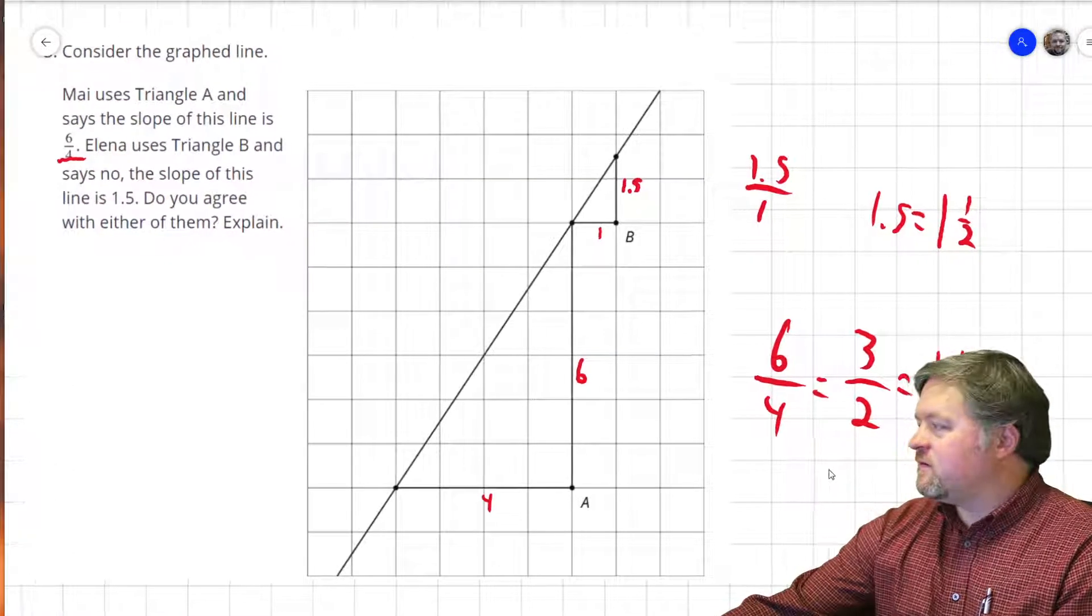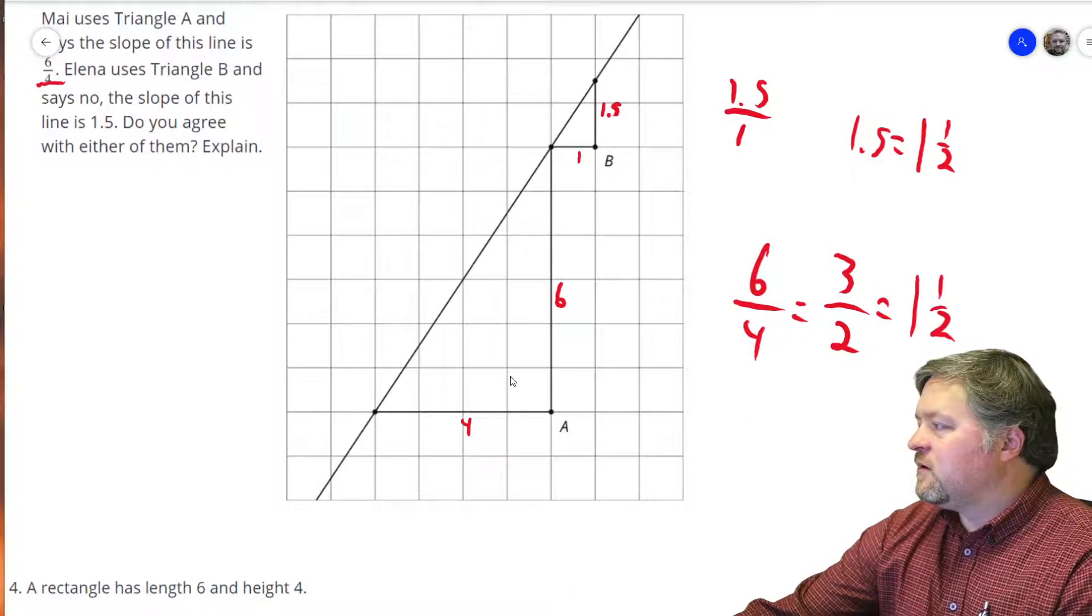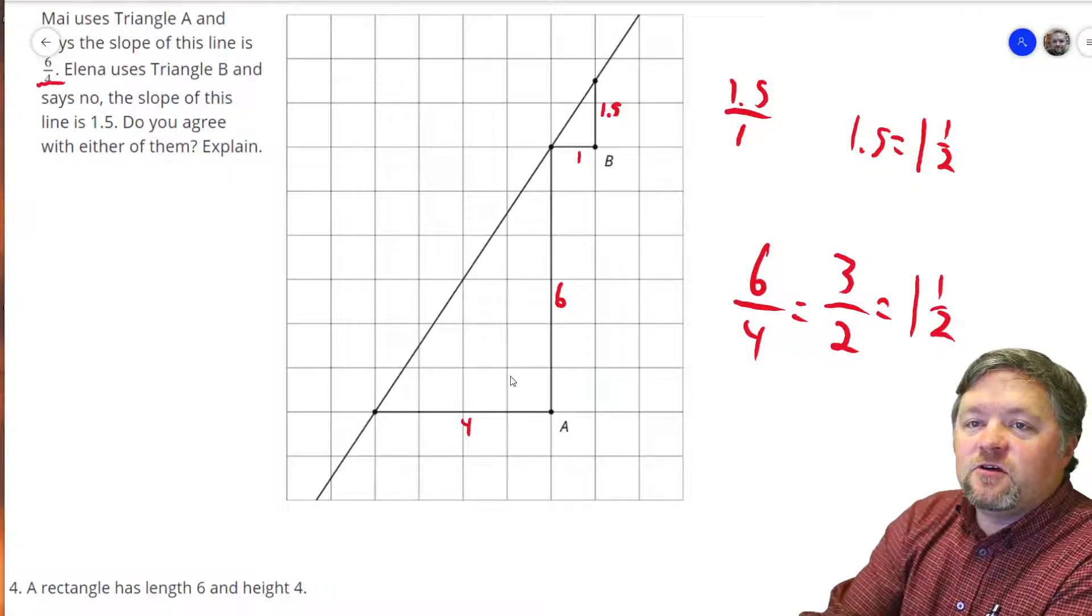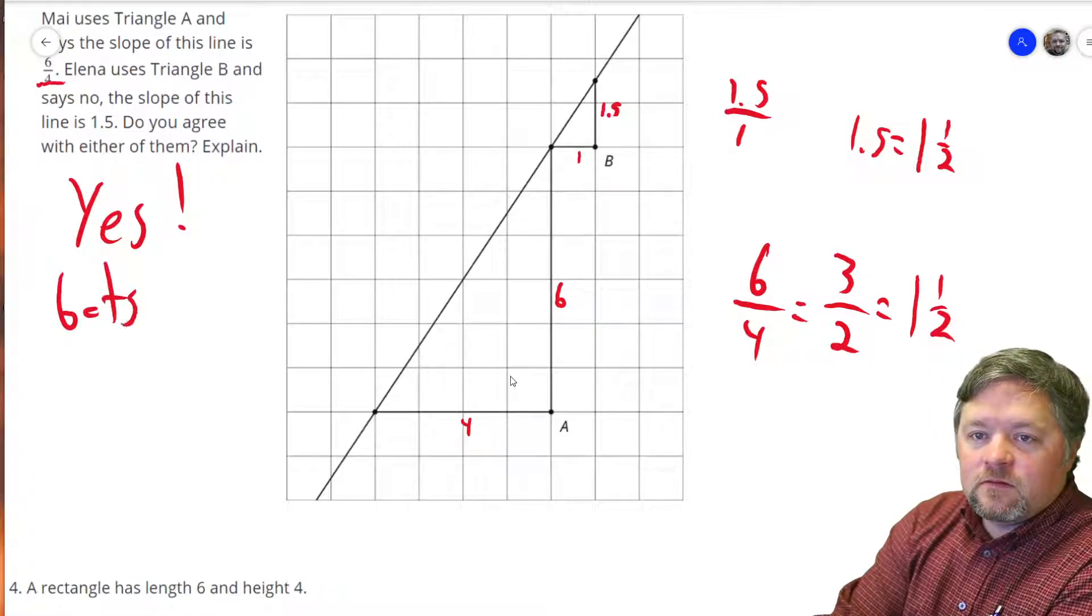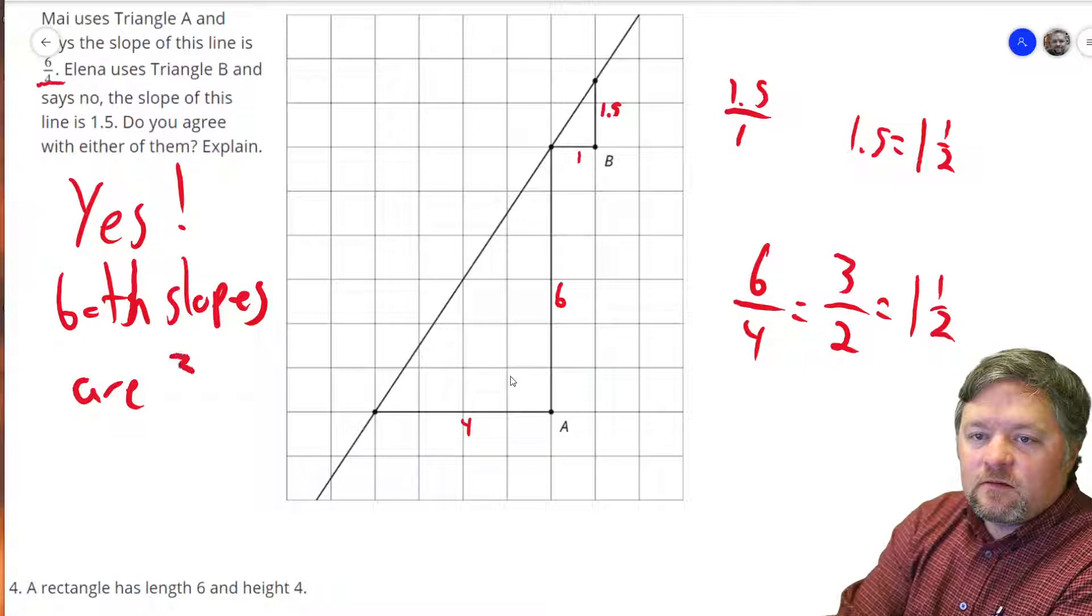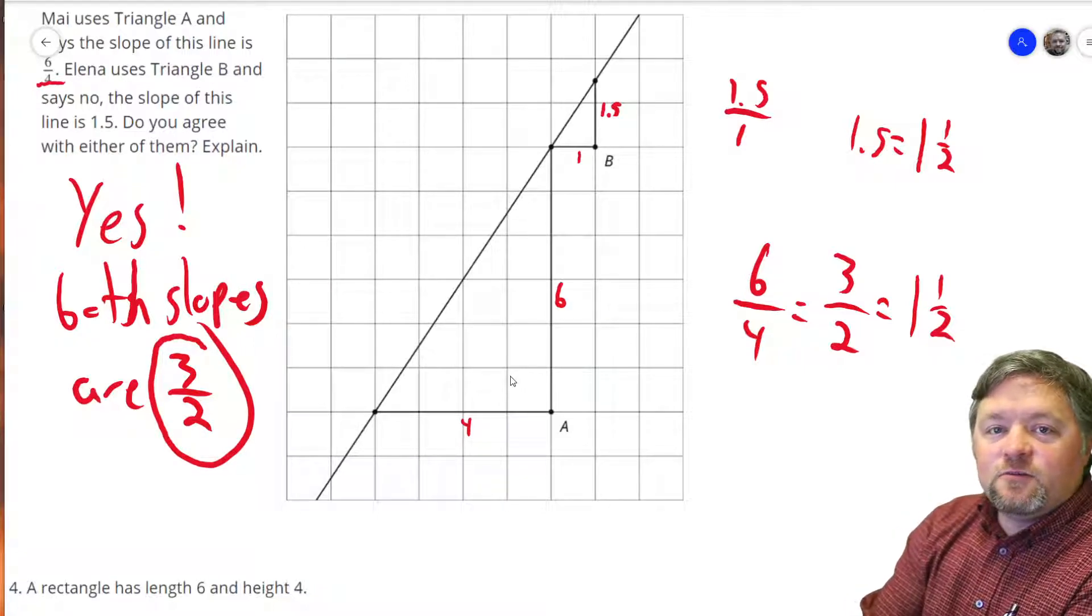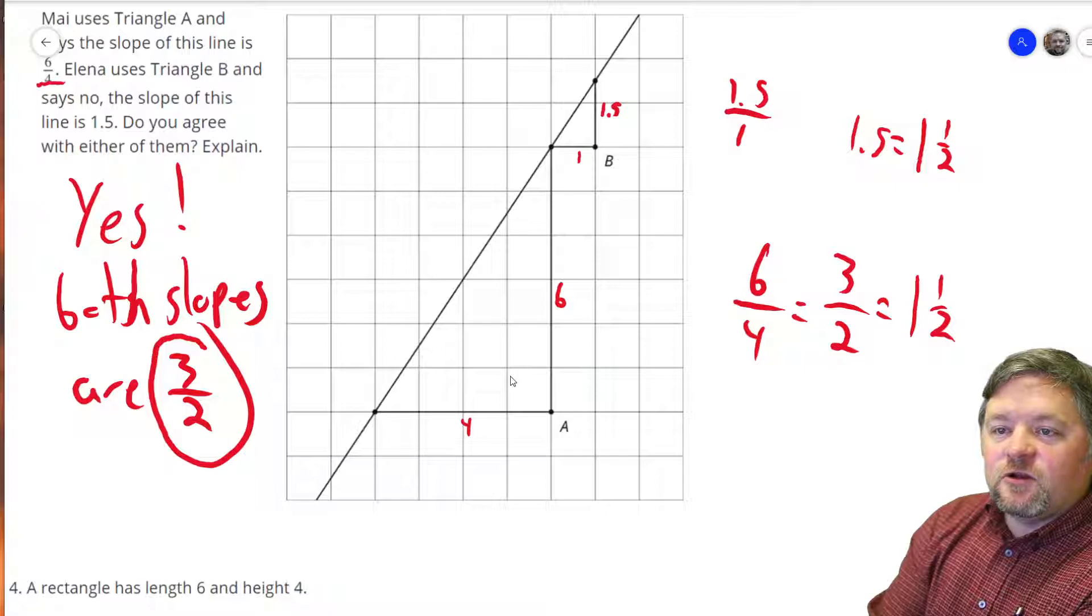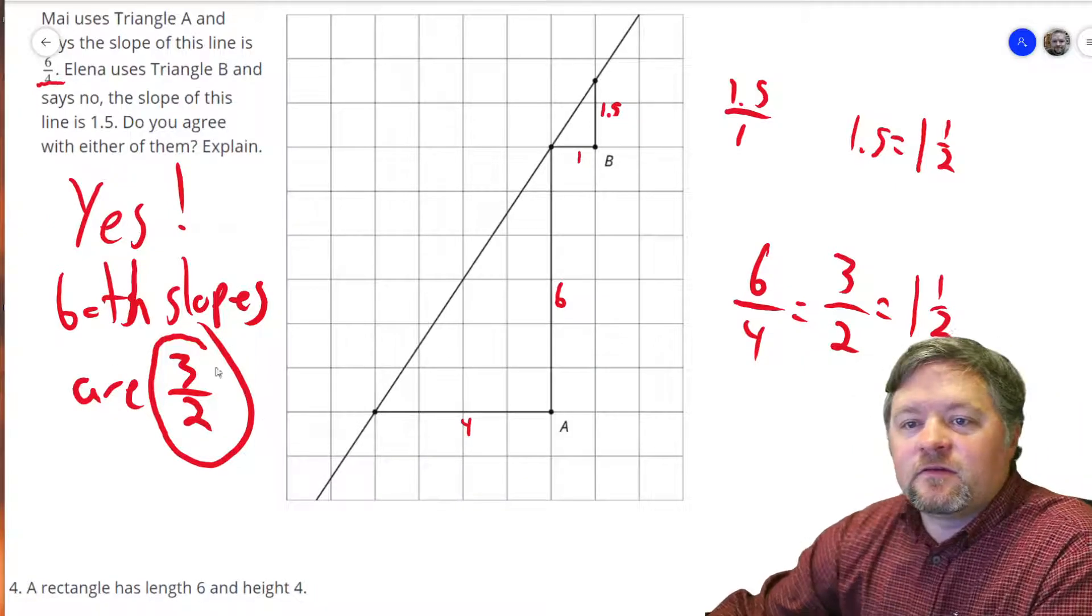My head's covering stuff. Say, hey, Mr. Boskin, could you kindly remove your head? Do you agree with either of them? Yes. Both slopes are 3 over 2. I like to always leave slope as a fraction. I don't care if it's an improper top-heavy fraction. Because if I'm looking at slope, knowing that I have a rise of 3 and a run of 2, up 3 over 2. Fractions are your friends.